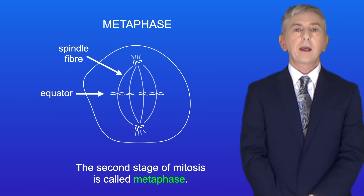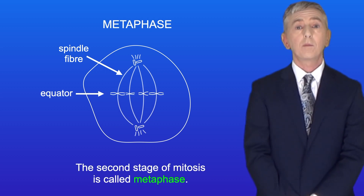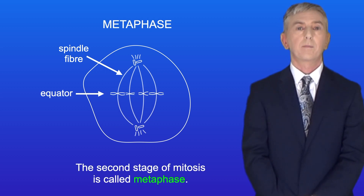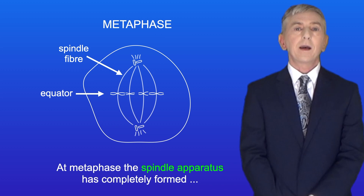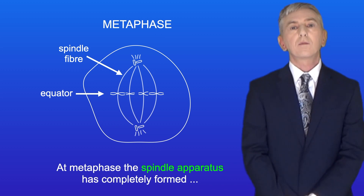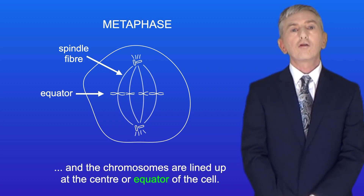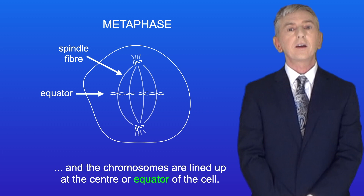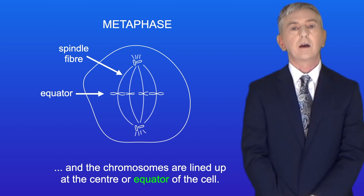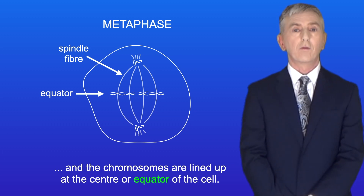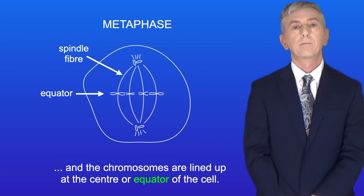The second stage of mitosis is called metaphase. At metaphase the spindle apparatus has completely formed, and the chromosomes are lined up at the center or equator of the cell.